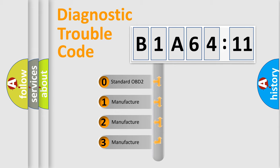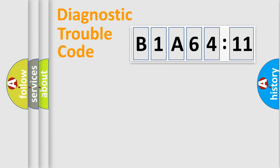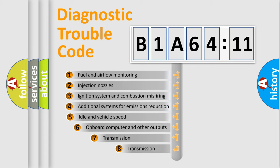If the second character is expressed as zero, it is a standardized error. In the case of numbers 1, 2, or 3, it is a manufacturer-specific expression of the car-specific error.